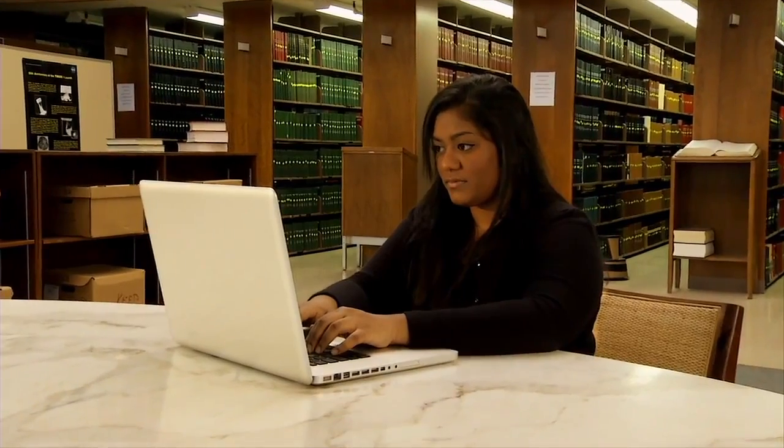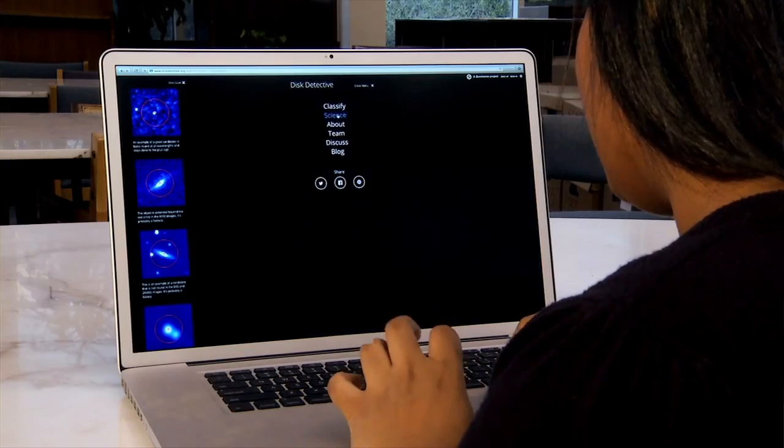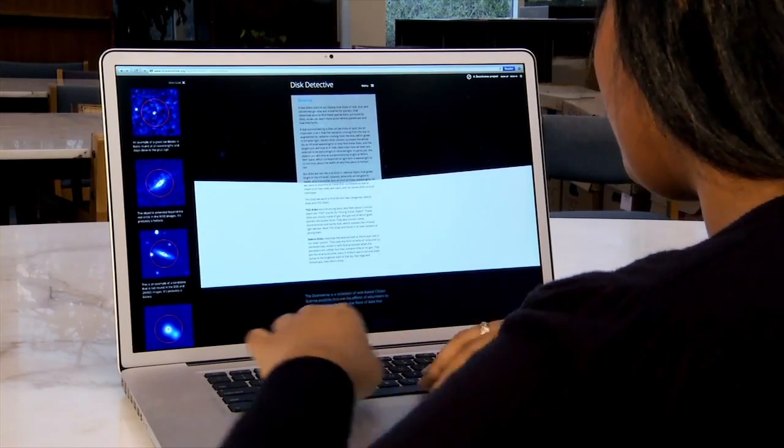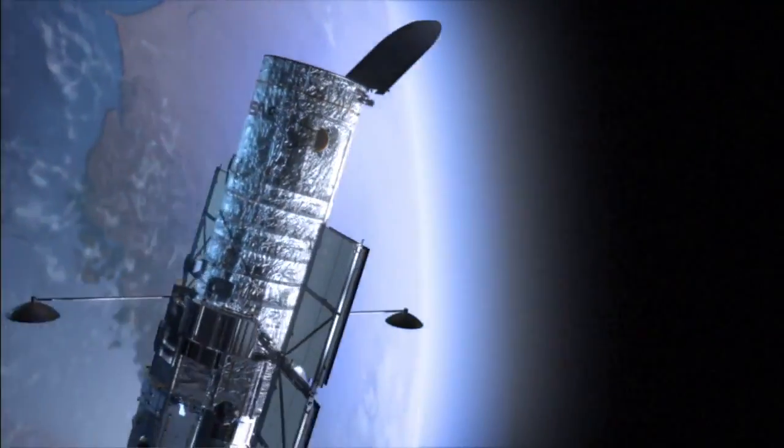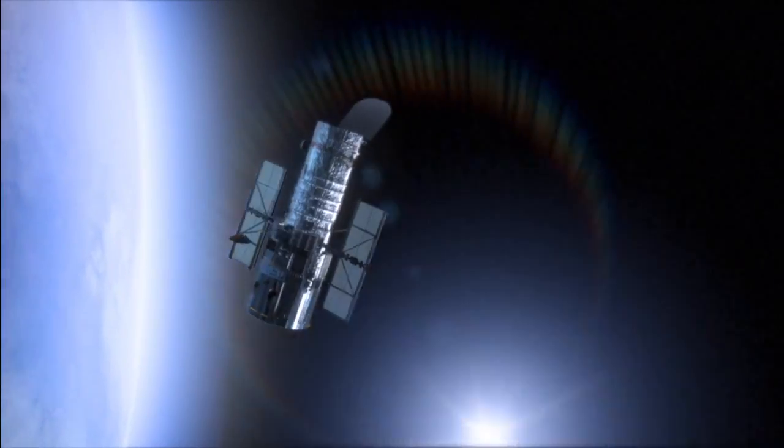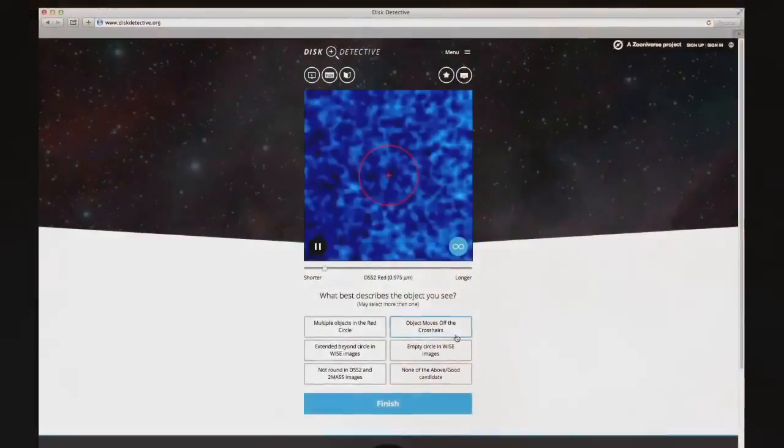Diskdetective.org is a NASA-led crowdsourcing project whose main goal is to produce publishable scientific results. The disks we find together will be future targets for telescopes like Hubble and the James Webb Space Telescope, which will search for patterns in the disks and for extrasolar planets they may contain.